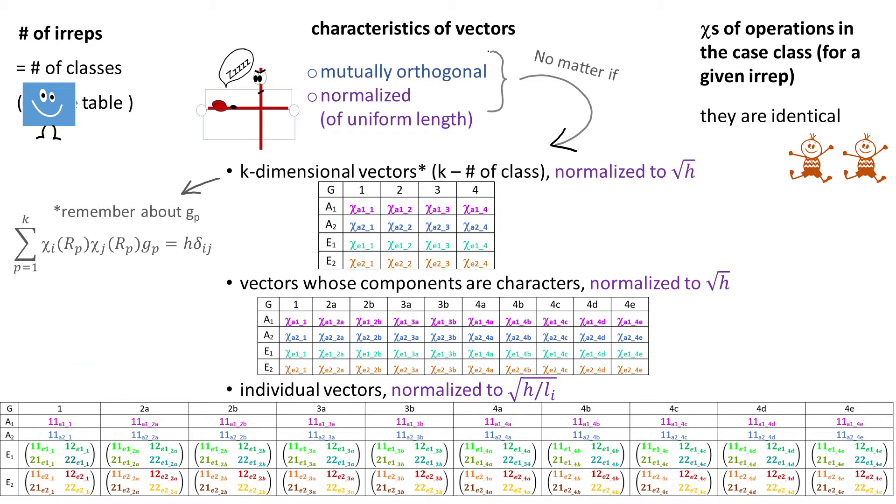If we focus on characters and we collect them into classes, the resulting table, the character table, is squared, because the number of classes equals the number of EREPs. The way to remember it is that everything that we are dealing with in this course is square, starting from the matrices that describe the individual operations, ending with the character table itself.